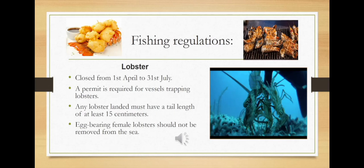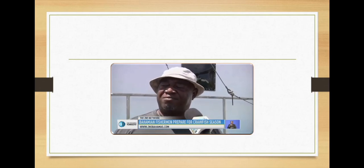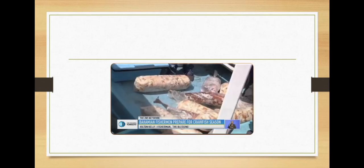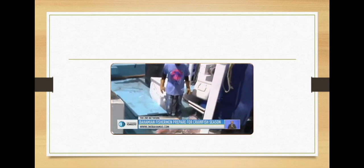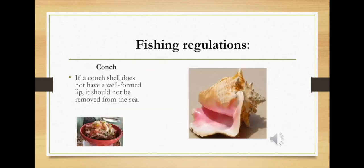And with August 1st right around the corner, seafarers of New Providence are ready to get the 2019 crawfish season off to a start. But first, they say, there's a long checklist of items to complete before they can be ready to go out to sea. Make sure we get enough fuel to be on the boat, make sure we get enough groceries to last for a long time out to sea. The fishing regulations in regards to conch states that if a conch shell does not have a well-formed lip, it should not be removed from the sea.